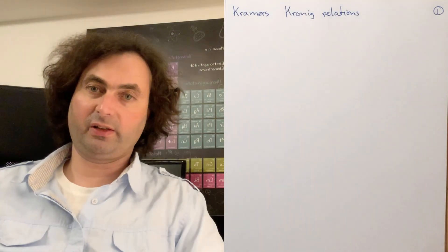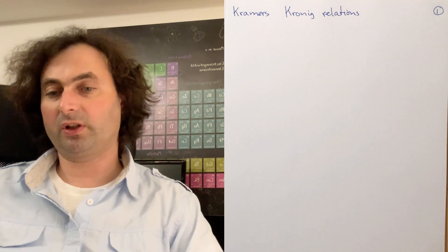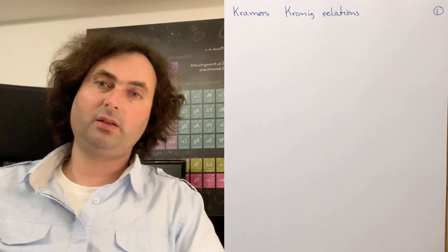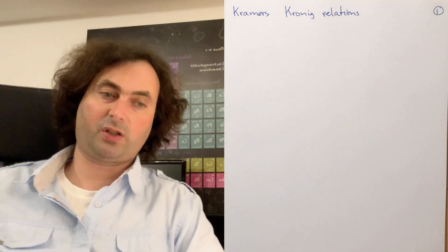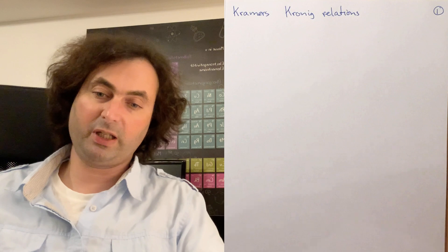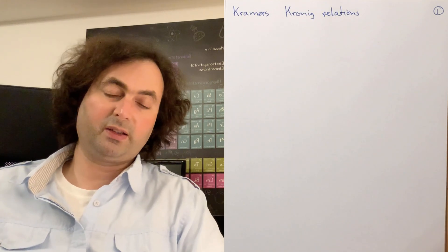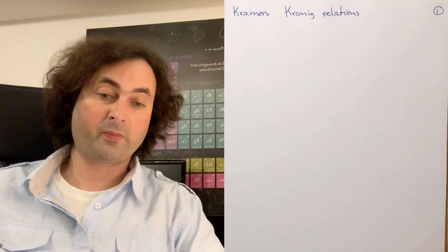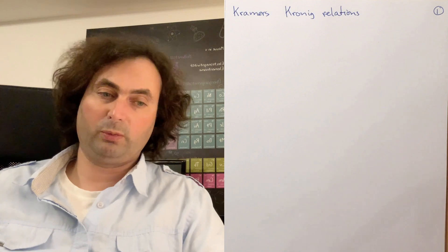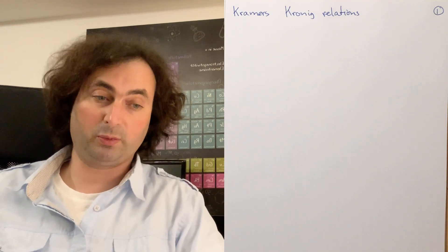Welcome to our next video in the series on condensed matter theory. In this video, I want to talk about the Kramers-Kronig relations. In the last few videos, we have discussed the response functions and shown that they have a real and an imaginary part, and the imaginary part of the susceptibility is related to absorption. The real part of the susceptibility relates to the induced dipole moment in an electromagnetic field, for example the electric dipole moment.